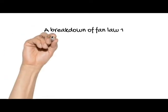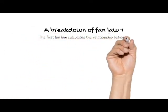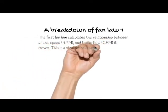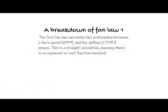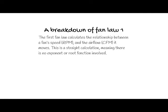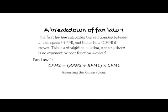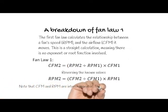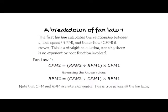Let's break down fan law 1. The first fan law calculates the relationship between a fan's speed and the airflow it moves. This is a straight calculation, meaning there is no exponent or root function involved. Fan law 1 states that CFM2 equals RPM2 divided by RPM1, times CFM1. If we reverse the known values, RPM2 equals CFM2 divided by CFM1, times RPM1. Note that CFM and RPM are interchangeable, and this is true across all the fan laws.